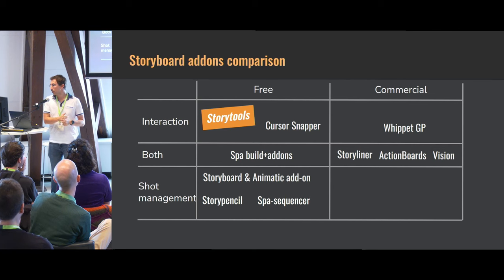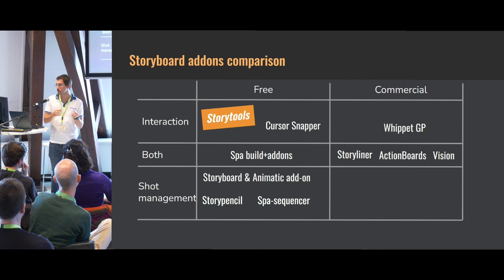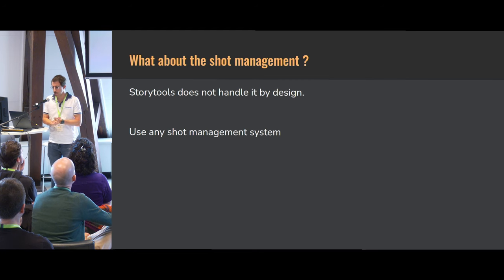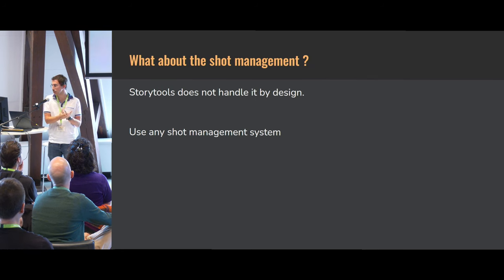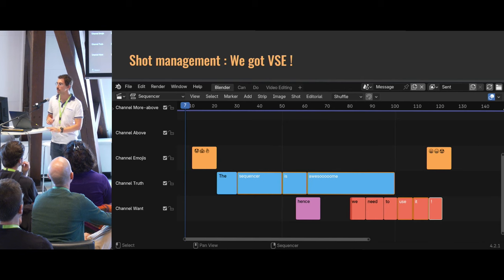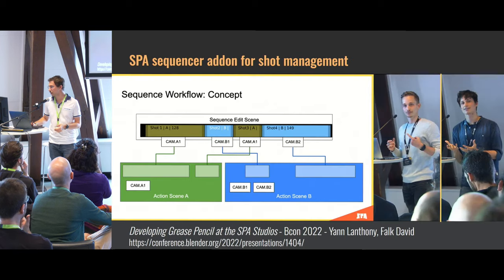I try to sort them by free versus commercial, and by whether they target interaction, shot management, or both. Story Tools is on the upper left of that chart — interaction only. For shot management, it doesn't do it. The reasons are simple: there are alternatives, I don't have time, I prefer the tooling part, and Blender's sequencer is getting better every year — we should use that.